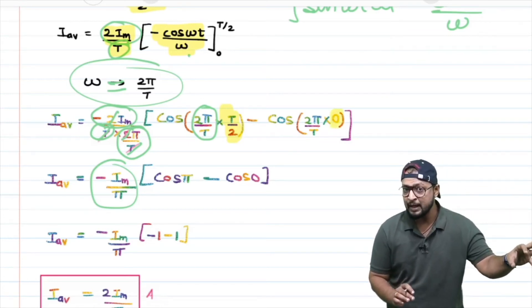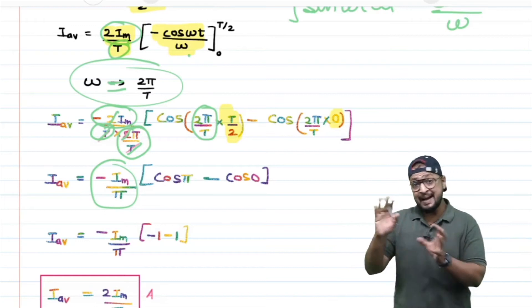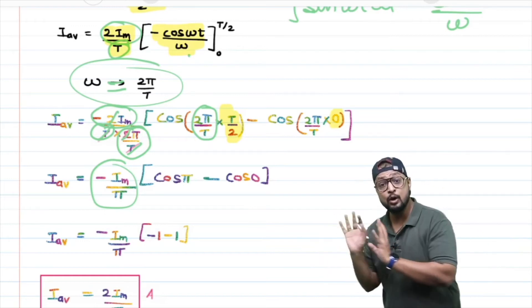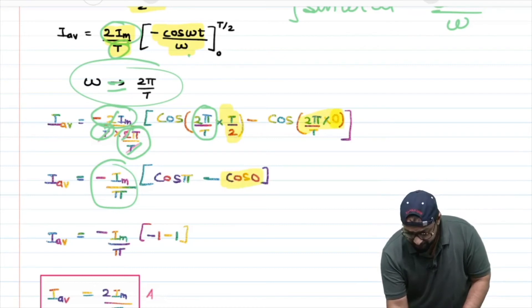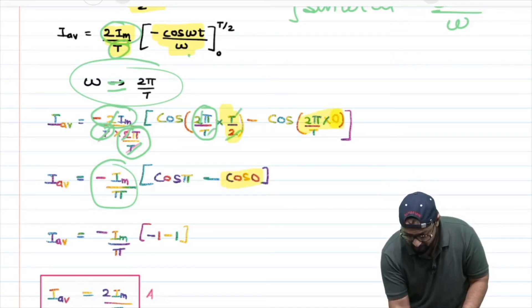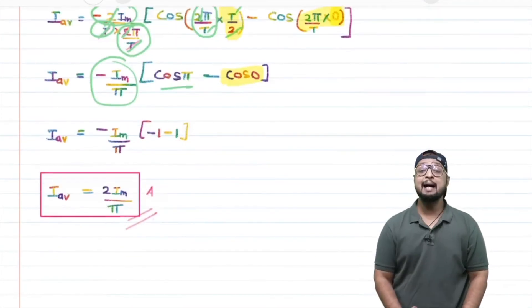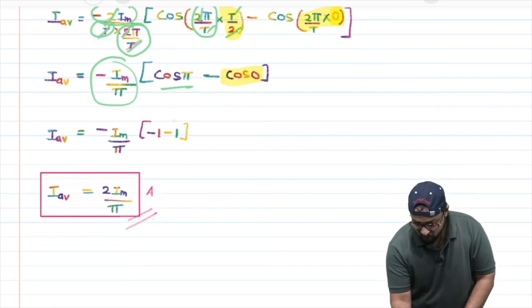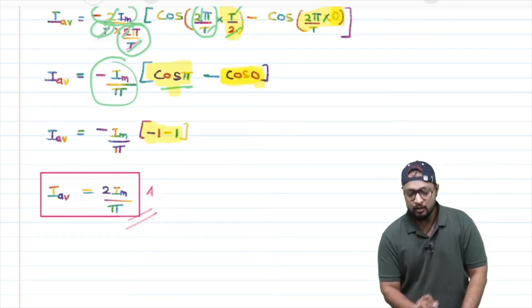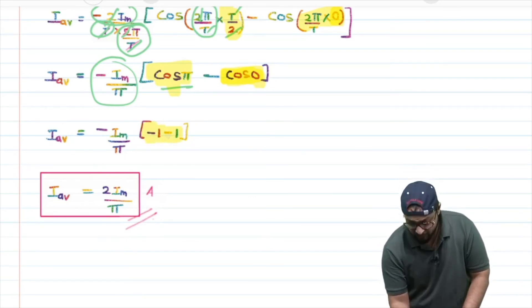And inside, put 2π/T for ω. Upper limit is T/2, lower limit is 0. So cos(ωt) becomes cos(2π/T × T/2) minus cos(2π/T × 0). cos(0) equals 1. Look carefully here: 2 cancels with 2, T cancels with T, leaving cos(π). cos(π) is -1, cos(180°) is -1. So this becomes -1, and cos(0) is 1. So -1 minus 1 becomes -2.